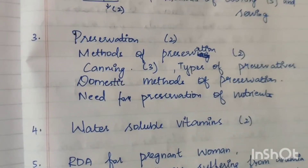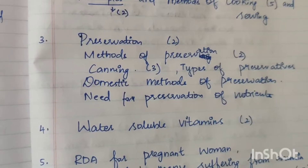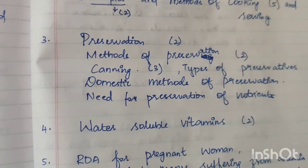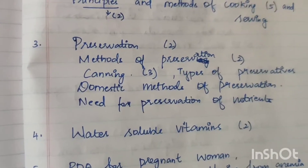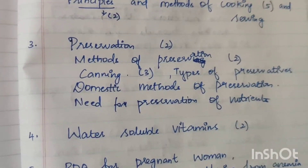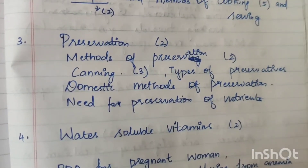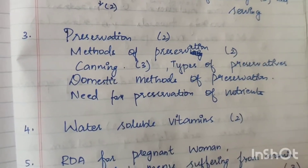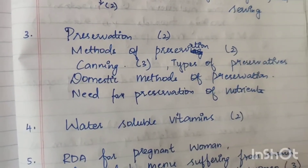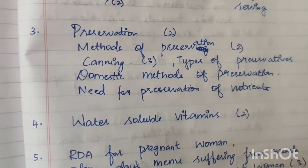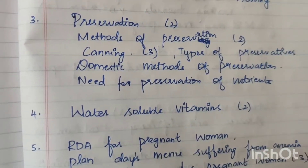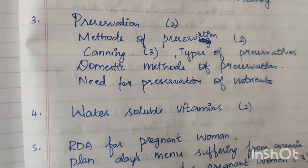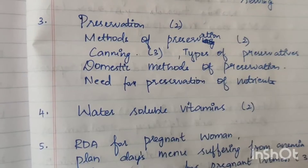Next topic: Preservation — 2 times. Methods of preservation — 2 times. Canning method — 3 times, with 1 question at 15 marks and 2 times at 5 marks. Types of preservatives — 1 time. Domestic methods of preservation — 1 time. Need for preservation of nutrients — 1 time.